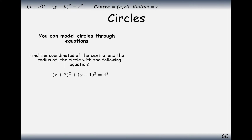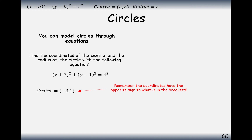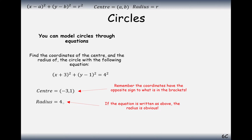Moving on to a couple of examples. Here we have (x + 3)² + (y − 1)² = 4². So the center is going to be at minus 3, 1 — because we take the negative of the value inside the bracket — and the radius is 4. This will generally be written as 16 on the right-hand side, so remember to square root that 16 to get the radius of 4.